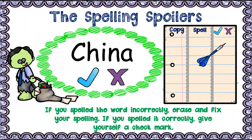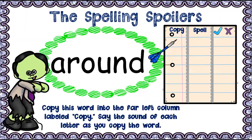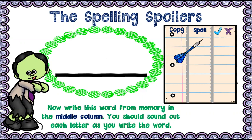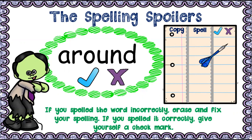Number three — 'around.' Around. Check it — make sure your 'uh' sound, that schwa, you're not spelling it with a 'u,' so you have to pick a different vowel. Around. If you were correct, mark 'yes' with 'around'; if you were incorrect, mark 'no' and copy it correctly.